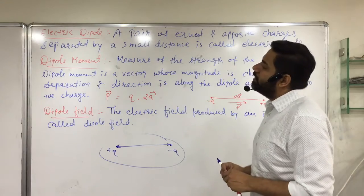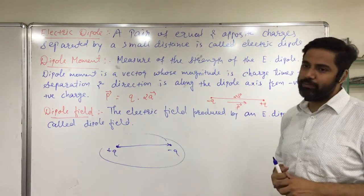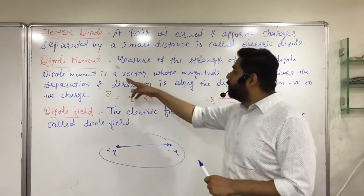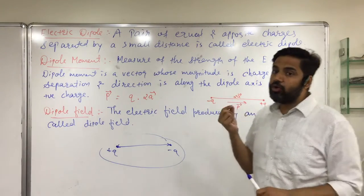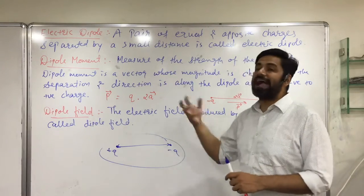What is the dipole moment? It is the measure of the strength of the electric dipole. What is the power of the dipole? Dipole moment is a vector. Dipole moment is a vector quantity. What is the magnitude?